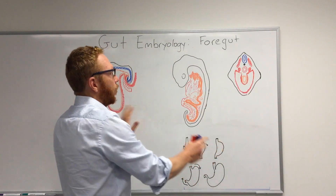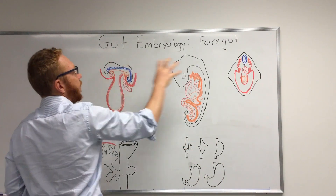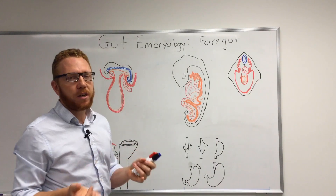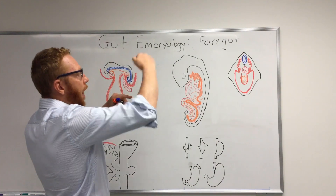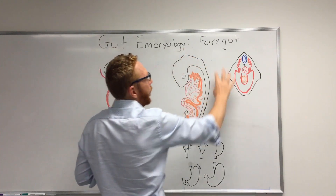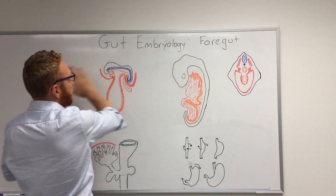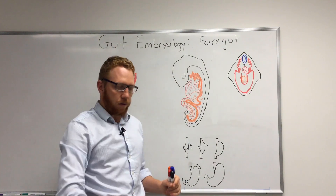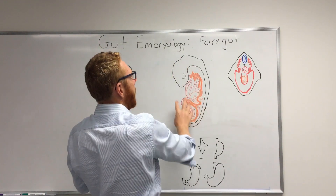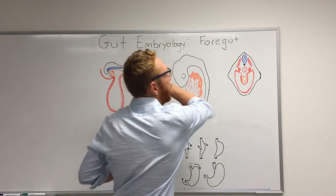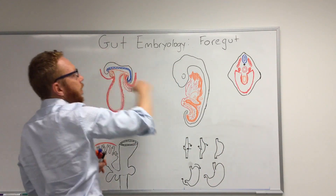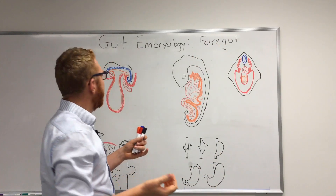Have a look at the board. The first three images I want you to look at are the top ones. Starting in black — the black is essentially the surface ectoderm, the top layer of the trilaminar disc, the outer part of the embryo. This is a mid-sagittal cut straight down the middle. This is more of an external view, and this is a complete cross-section.